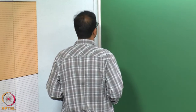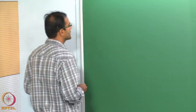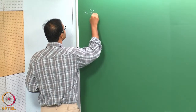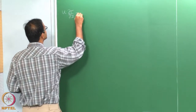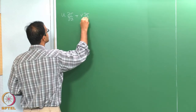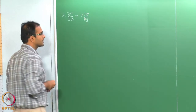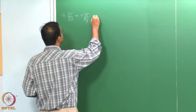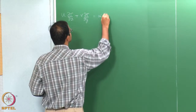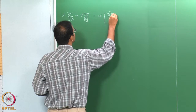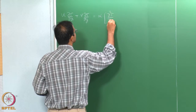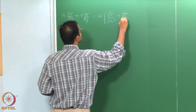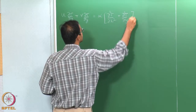When we look at the energy equation, which is nothing but U dT/dx plus V dT/dy — these are the 2-dimensional steady-state incompressible energy equation — alpha into d²T/dx² plus d²T/dy².